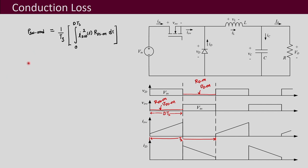Similarly we can write for the diode: the diode conduction loss P_d_cont will be (1/Ts) integrated from DTs to Ts of I² Rd_on dt, because the diode conducts from DTs to Ts. Here we multiply by the diode on-state resistance and not the MOSFET on-state resistance.